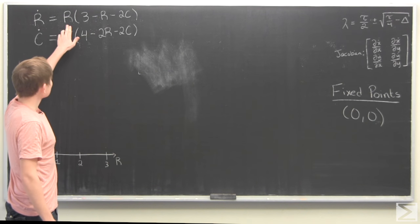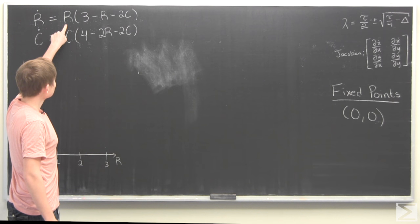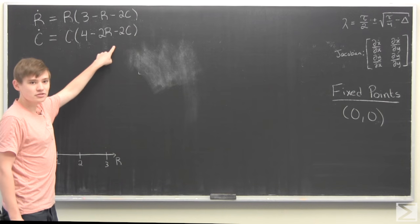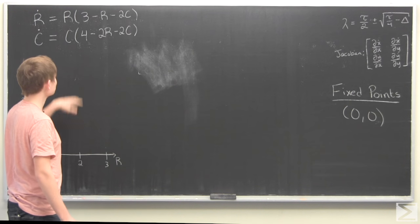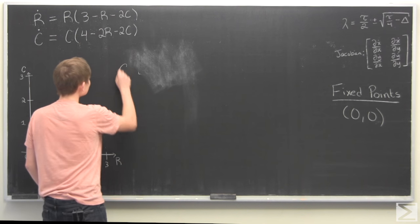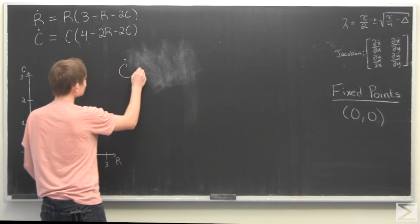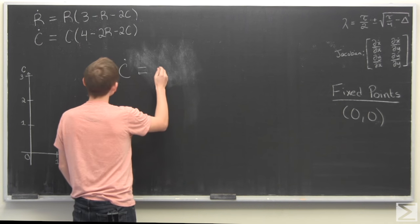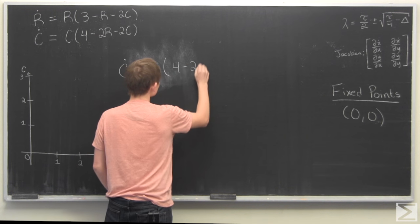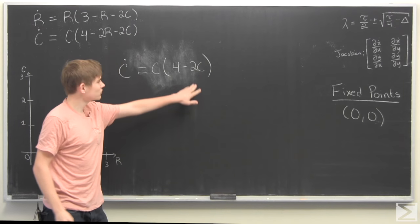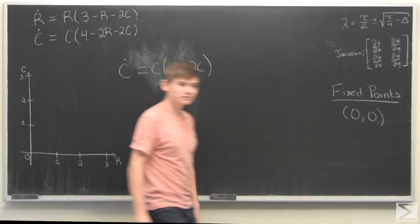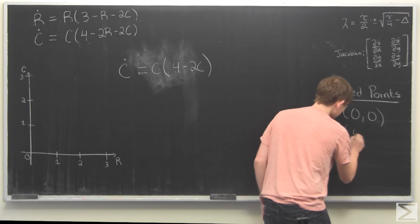Now we can set R equal to 0 and then see if we can set this equal to 0 without also setting C equal to 0. So if R is equal to 0 we have C dot is equal to C times 4 minus 2C. So if we set C equal to 2 this will be equal to 0 and therefore C dot will be equal to 0. So we have one more fixed point.